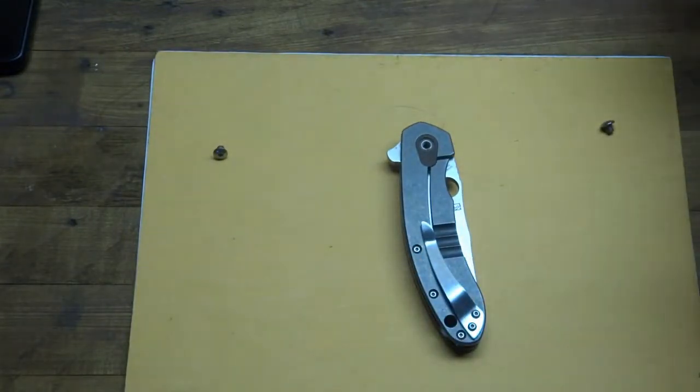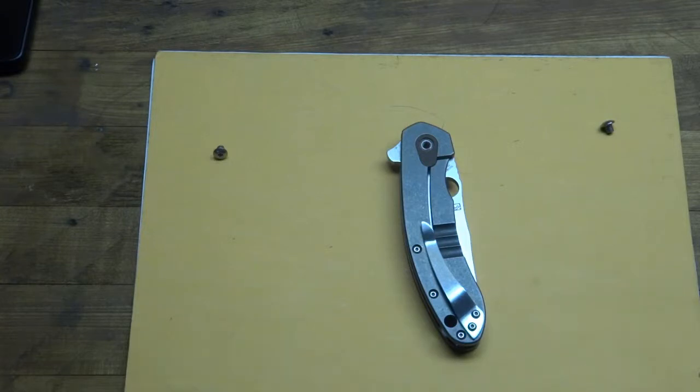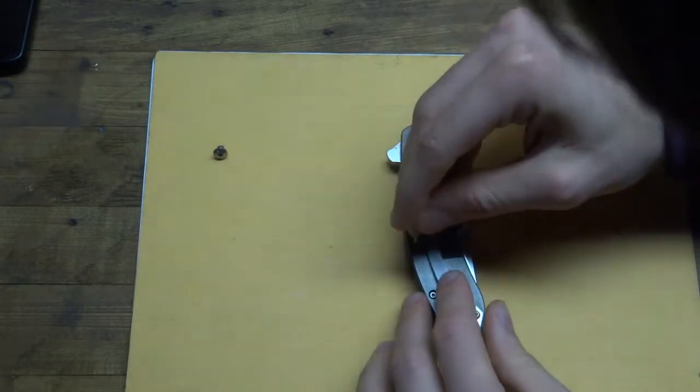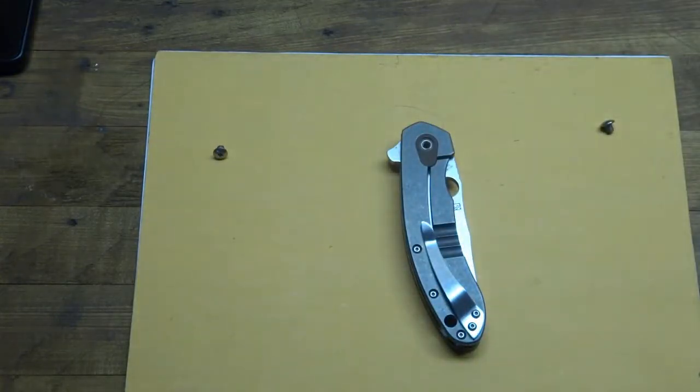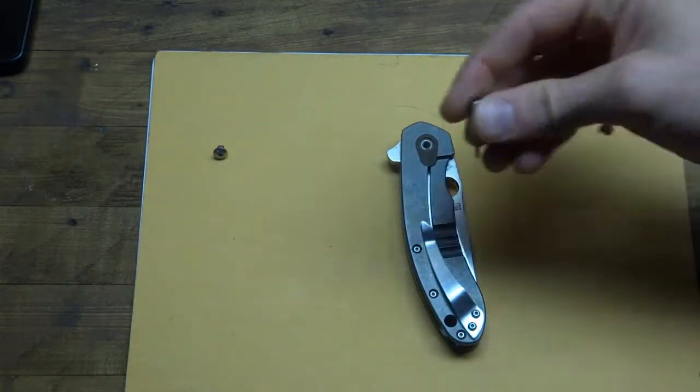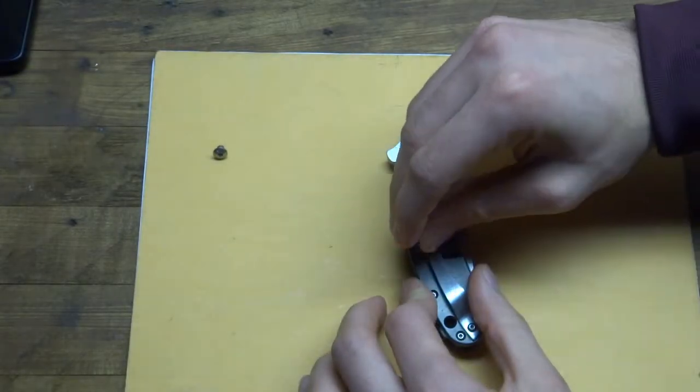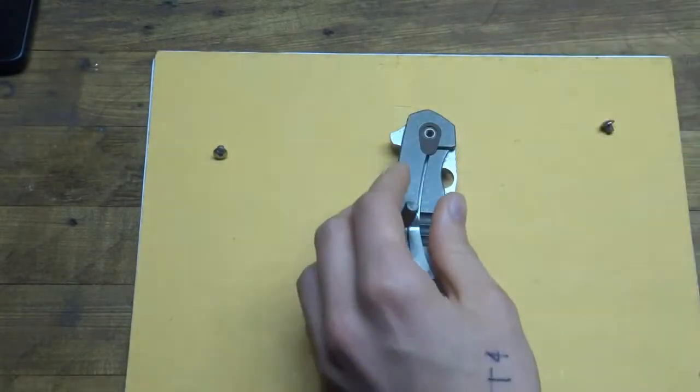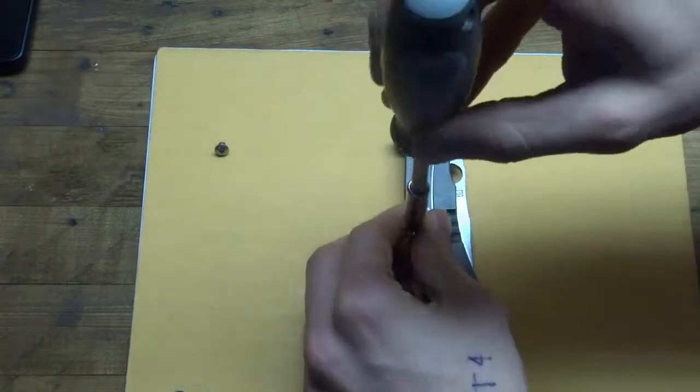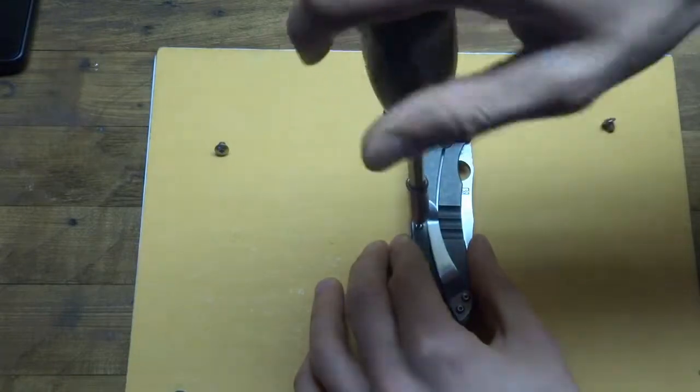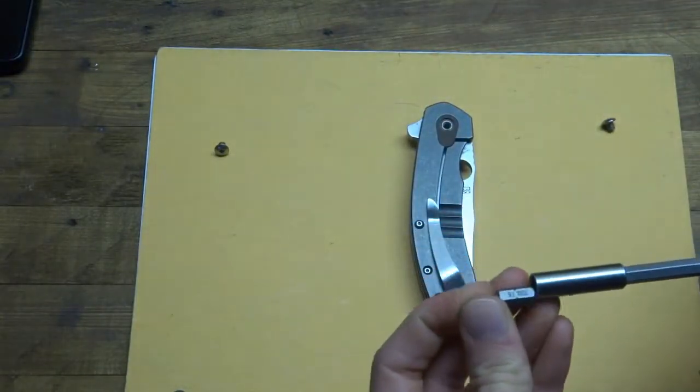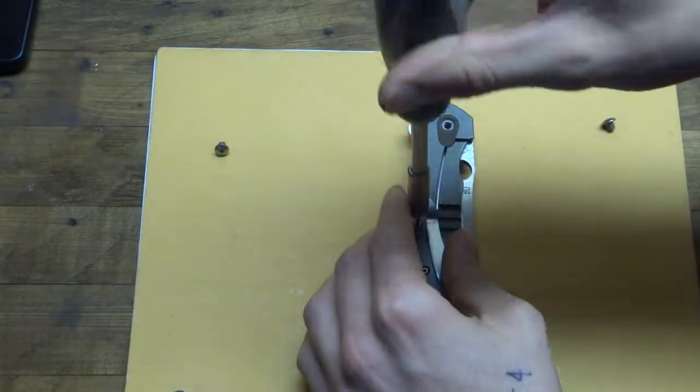I'm going to try and be careful because I know this runs on some bearings, and I've never taken apart a knife on a bearing system before. So I want to be careful. I don't want to make any mistakes here. And sorry for the awkward angle here. I'm kind of, arms are intertwined with the tripod here. And just so you know, for the handle scales, this is a T6, so a Torx size 6.